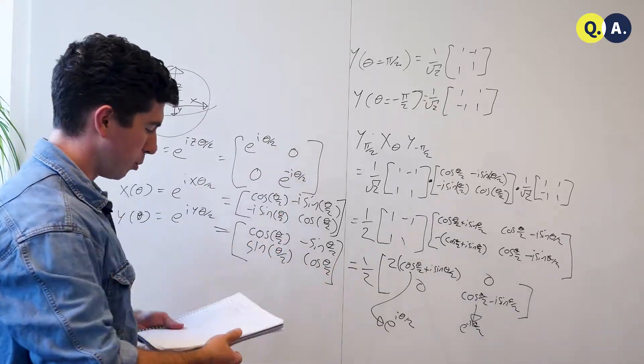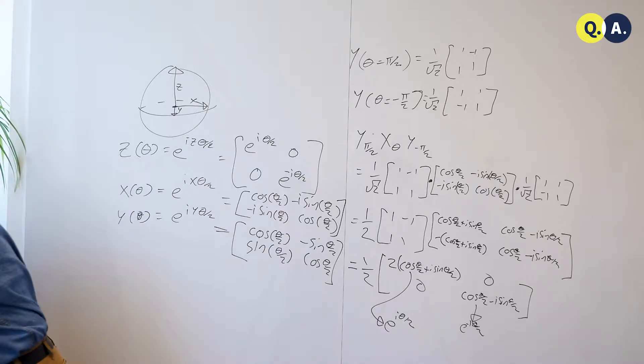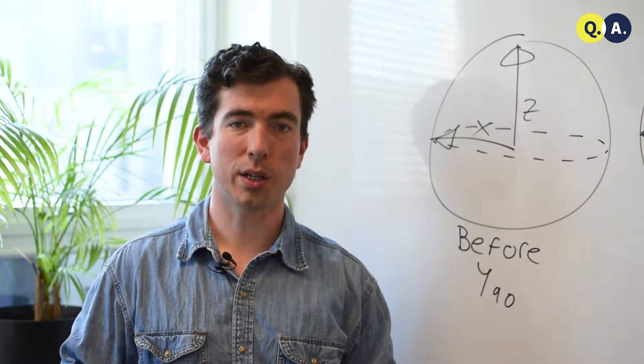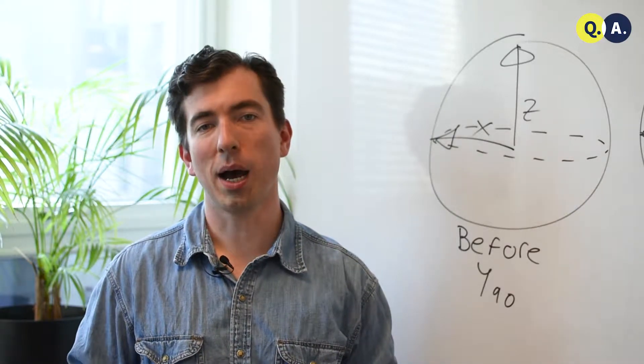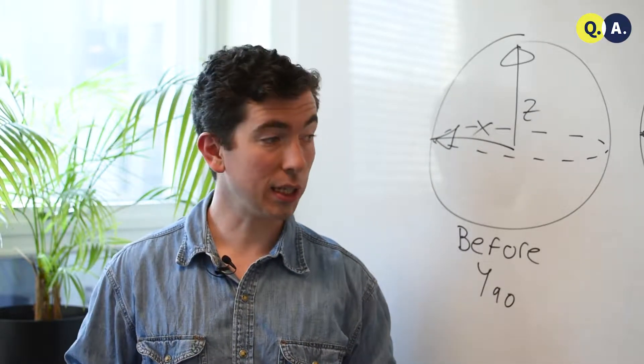But this is not as simple as it could be. There's a far easier way to see this, which we can do using the Bloch sphere. The action of this sequence of unitary operations, y 90, x around some angle theta, and then y minus 90, can be expressed in terms of matrices, but it's much easier to understand using the Bloch sphere.